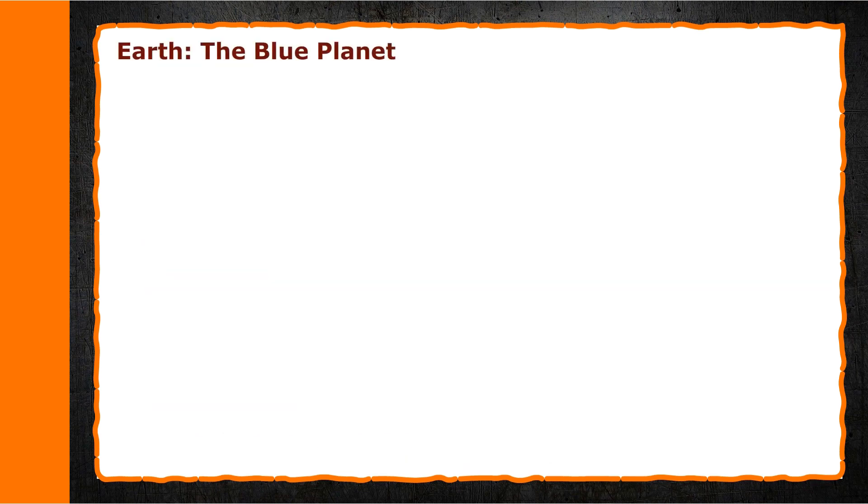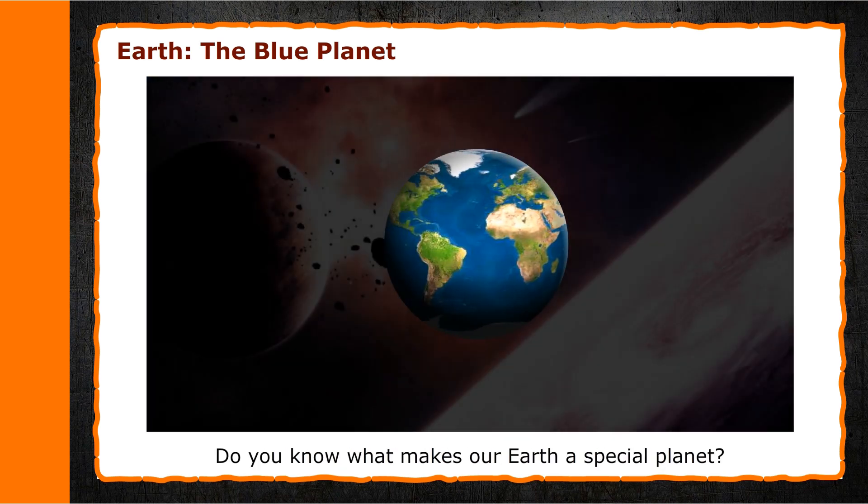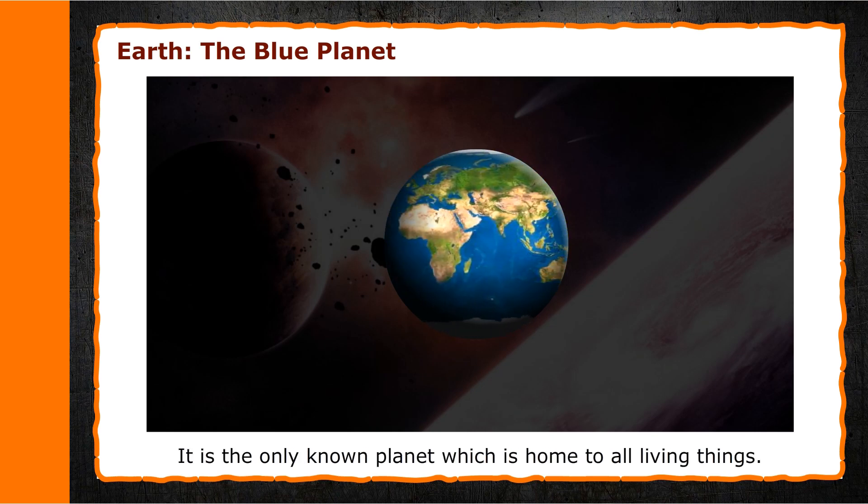Earth: The Blue Planet. Look at the pictures of the solar system given above. The Earth is the third planet from the Sun. Do you know what makes our Earth a special planet? It is the only known planet which is home to all living things. This means it is the only planet that supports life.